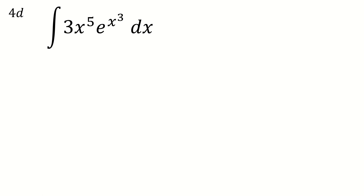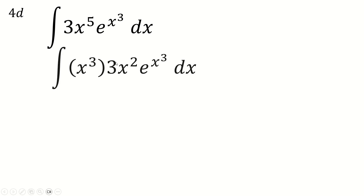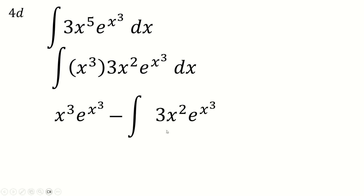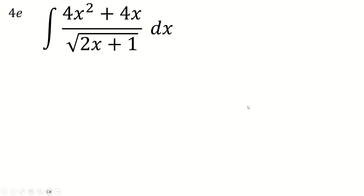More integration by parts, but again think carefully about grouping. Break 3x to the 5 into x cubed times 3x squared. Now the whole product of (something involving x cubed) can be taken as one part, integrating nicely by reverse chain rule. Leave x cubed alone and differentiate for 3x squared, then integrate the other factor a couple of times. Because that factor differentiates to 3x squared, everything integrates beautifully and the answer comes out quickly.